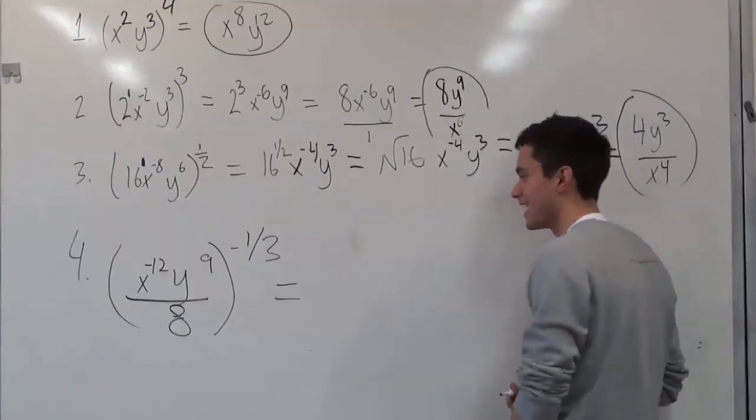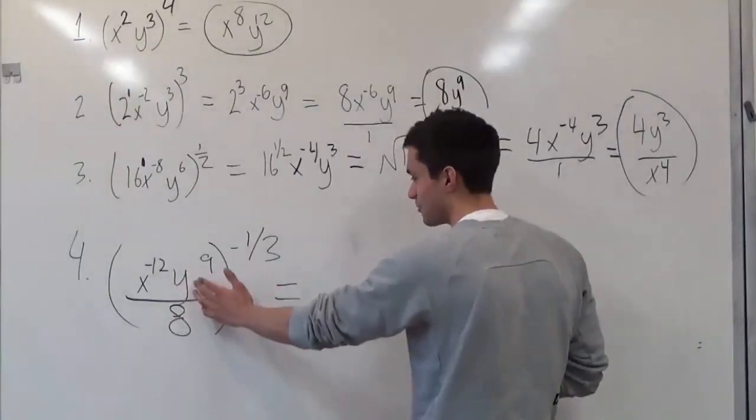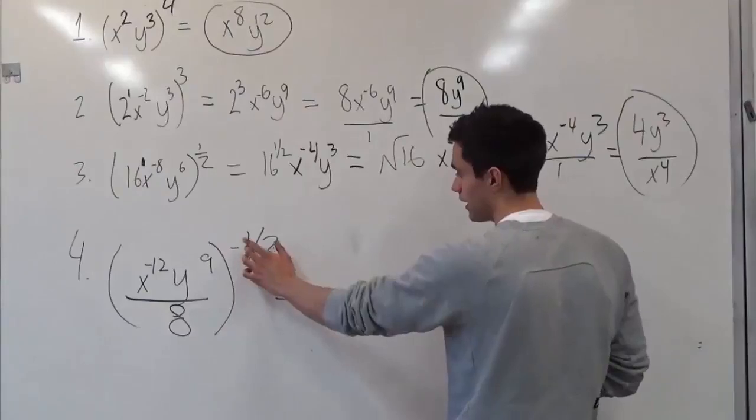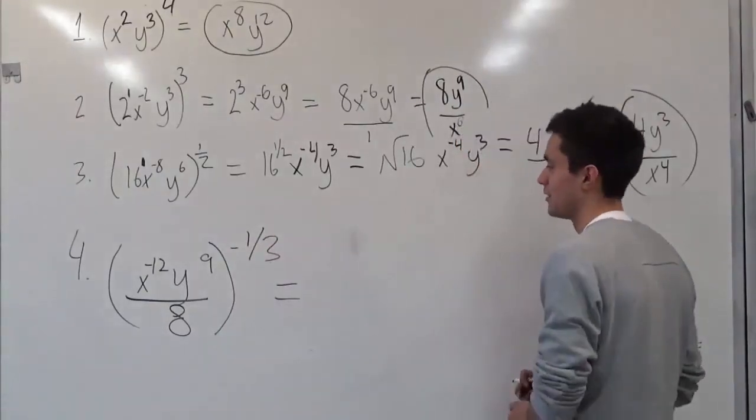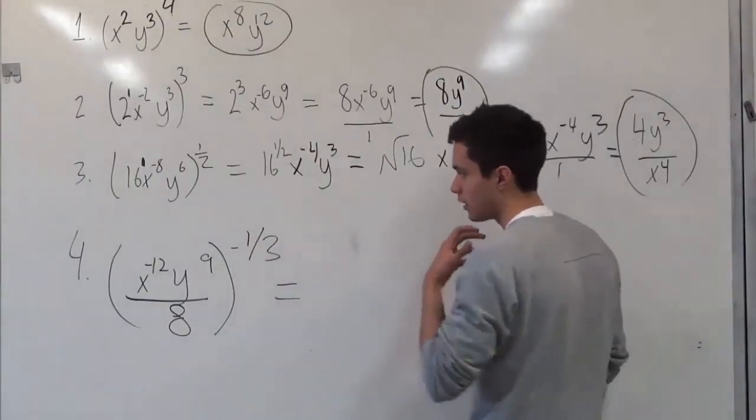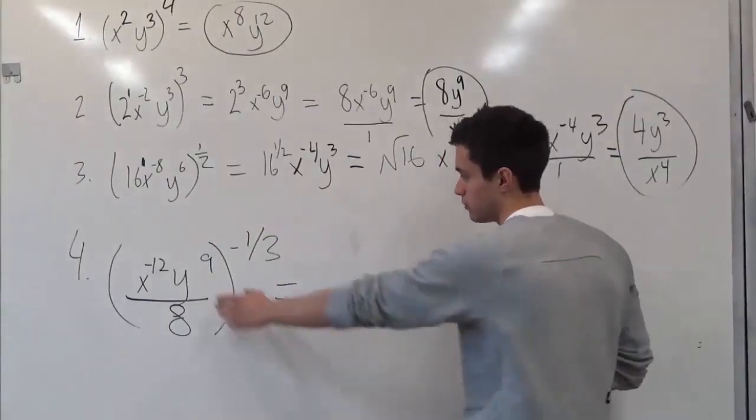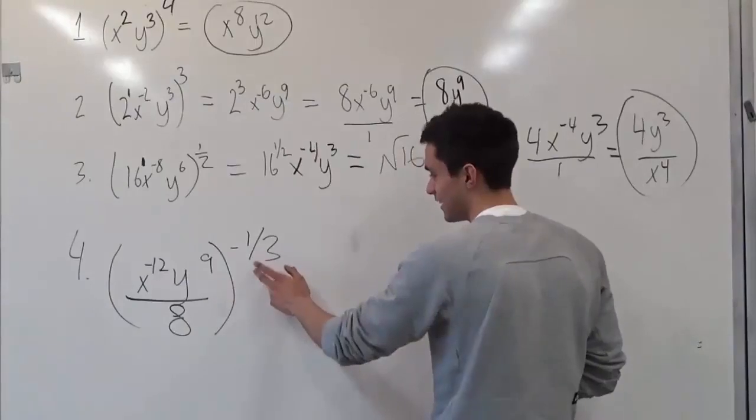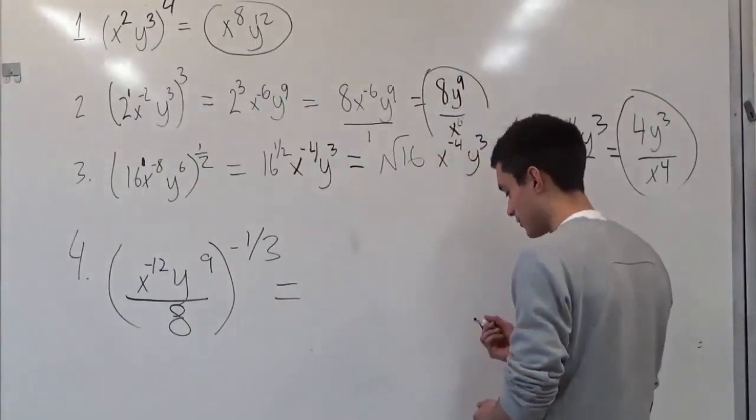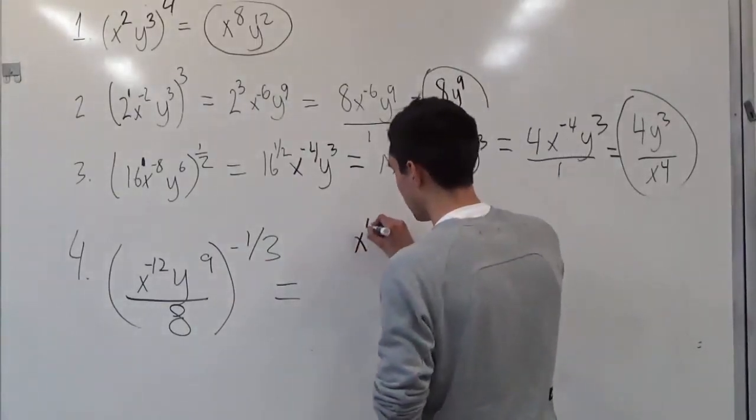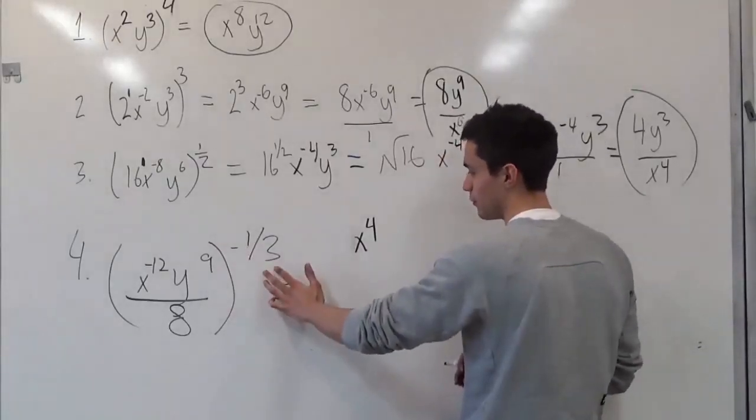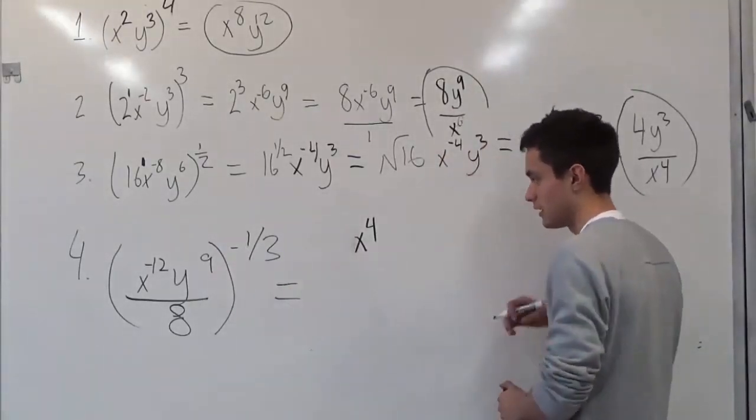All right. So as you can see, we have x to the negative 12 times y to the ninth all over 8 to the negative 1 third power. So we'll use our rules by always multiplying the exponents. So negative 12 times negative 1 over 3 will give us x to the positive 4. 9 times negative 1 over 3 would give us negative 3.